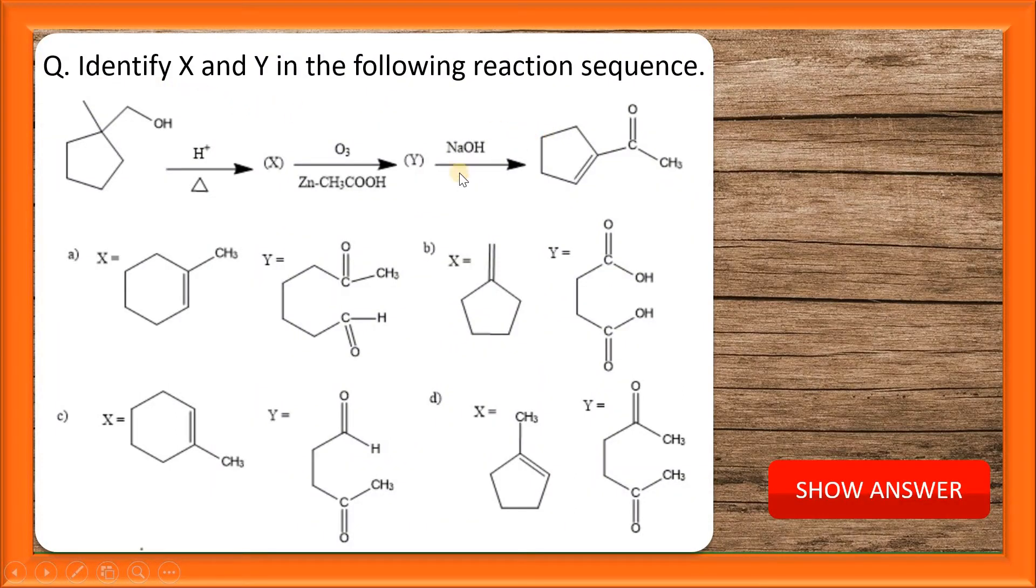Identify X and Y in the following sequence of reaction. This is the reactant. This on heated in acidic condition gives rise to X.